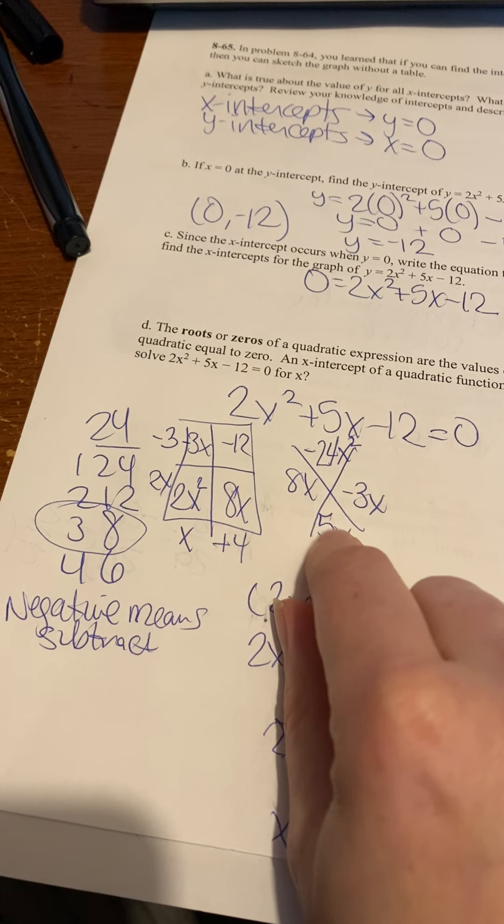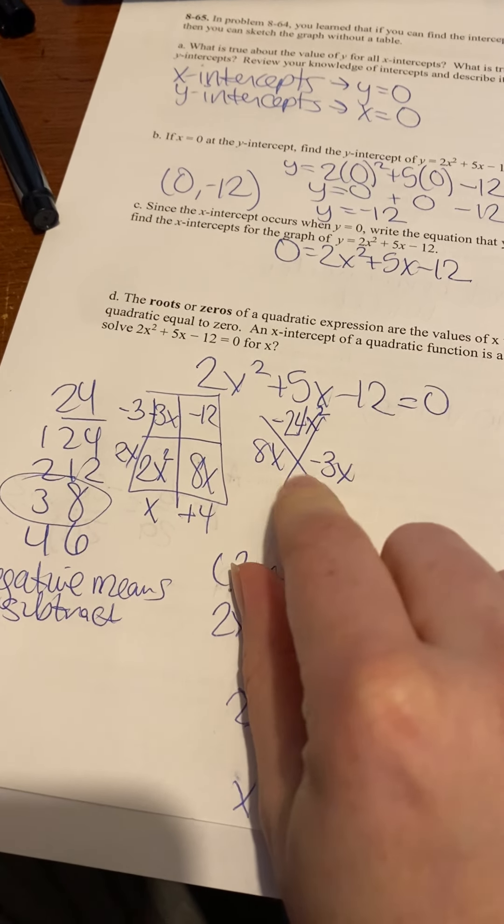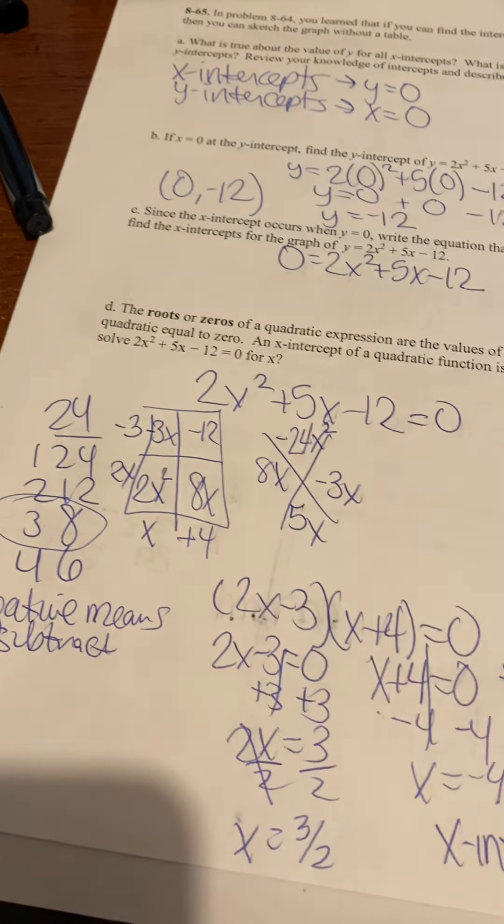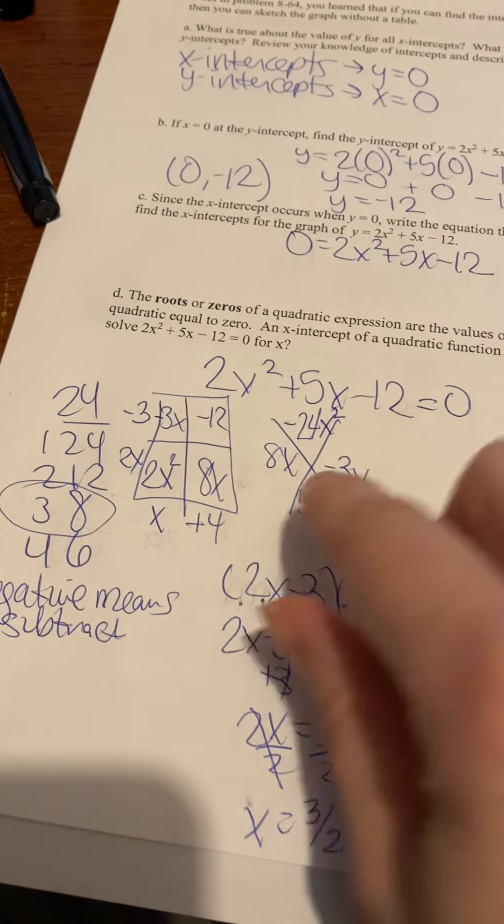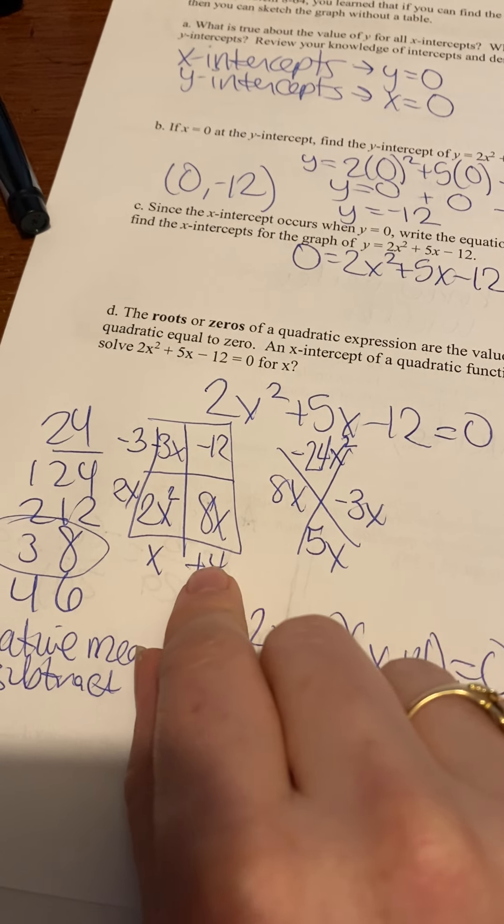It'll get the same sign as the biggest one. So if this is going to be positive 8x, this is 5x. Or, since this is positive, the big one has to be the same. Sorry, I twisted that around.